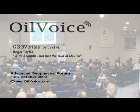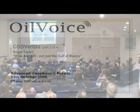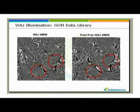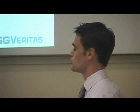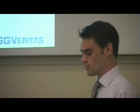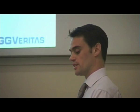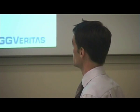Here's an example of some real data from the Gulf of Mexico. We're looking at a depth slice through some salt bodies and some sediments draped onto those salt bodies. We have a wave equation migration on the left from narrow azimuth and a wave equation on the right from our wide azimuth data. The improved illumination and multiple attenuation from the wide azimuth data brings out details in the settings.